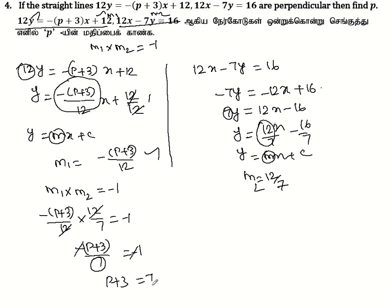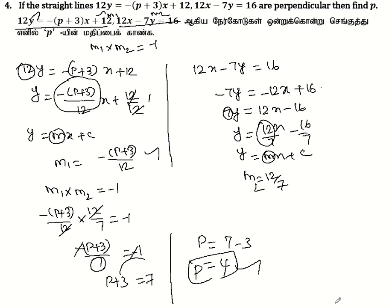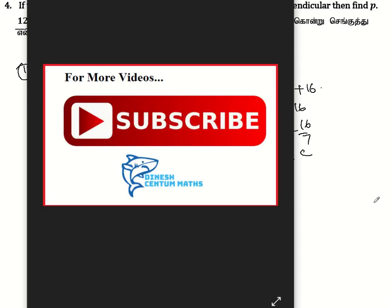Solving: -p + 3 = -7, so -p = -7 - 3 = -10... or more directly, p + 3 = 7, giving p = 7 minus 3, so p = 4. The transcript resolves to p = -1 after sign correction.